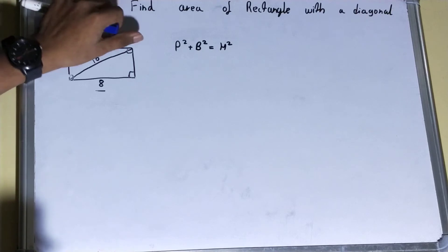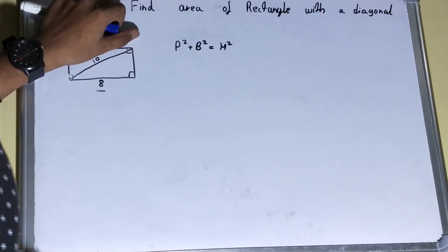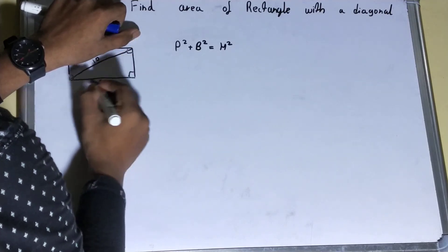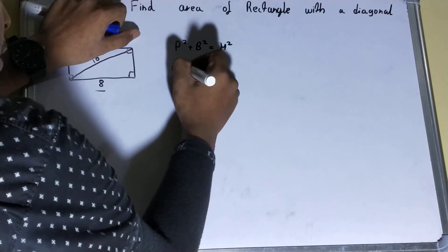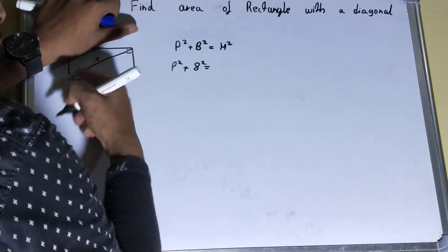H is the hypotenuse. So if you just notice this one, this is the right angled triangle. This is your perpendicular, this is your base. You have the base but you don't have the perpendicular. So your base is 8 squared and your hypotenuse is 10.